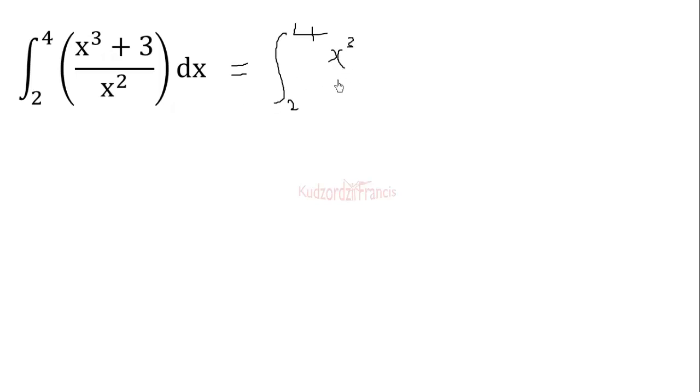So let's split the numerator to get x cubed over x squared plus 3 over x squared dx. Now what we need to do is to apply laws of indices to evaluate the exponent.